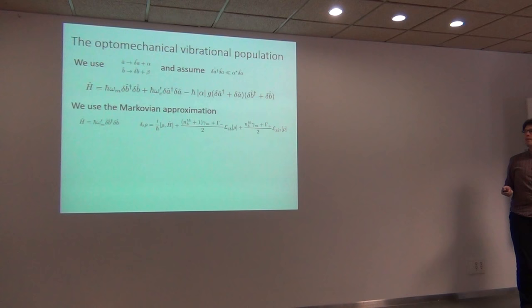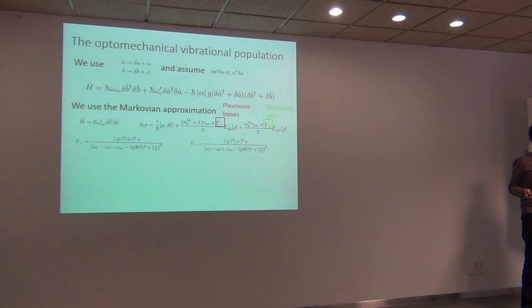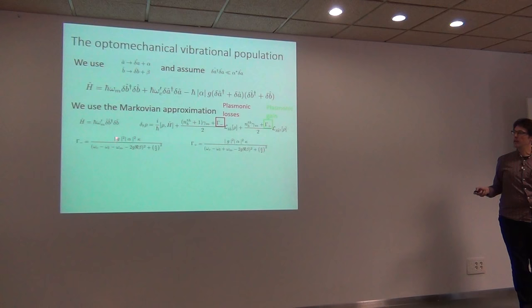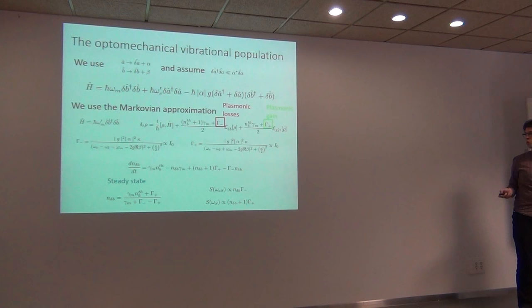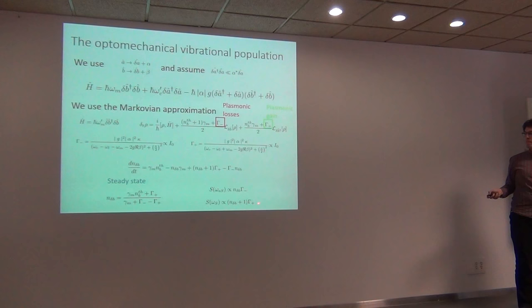Once we have this Hamiltonian, we can apply the standard Markovian approximation and quantum noise approach. The plasmon basically acts as a bath that can be eliminated from the Hamiltonian, and we get a very simple Hamiltonian only of the molecules. The effect of the plasmon is to introduce both a loss channel and an incoherent pumping channel. This simple Hamiltonian depends on pumping and loss terms that are proportional to alpha squared — that is, proportional to the laser intensity — which is important in the following. From this we can get the dynamics of the phonon populations and the steady state.